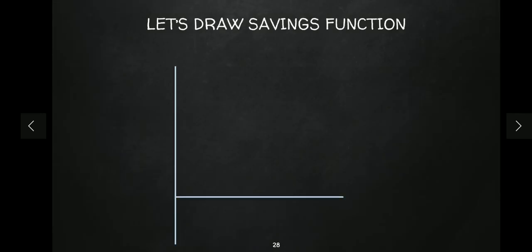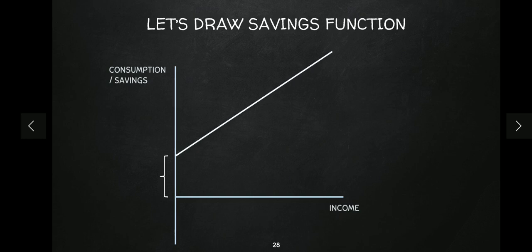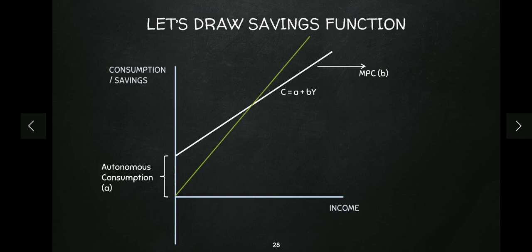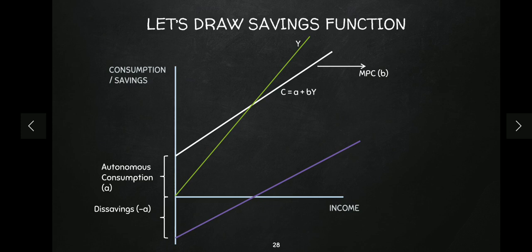Now let's draw the savings function on the graph as well. On the x-axis we have income, and on the y-axis we have both consumption and savings. First, here is our consumption line with autonomous consumption at the Y-intercept and slope equal to MPC. There is also the 45-degree income line. Comparing these, the savings function starts below the origin — at −a, which is the dis-savings amount — and its slope is the marginal propensity to save, (1−b).